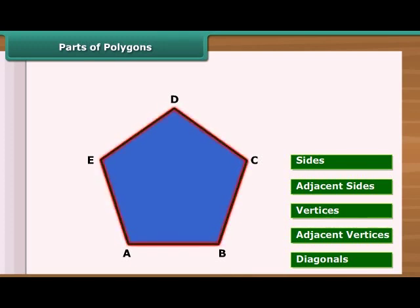Here A, B, C, D and E are the vertices of given polygon.